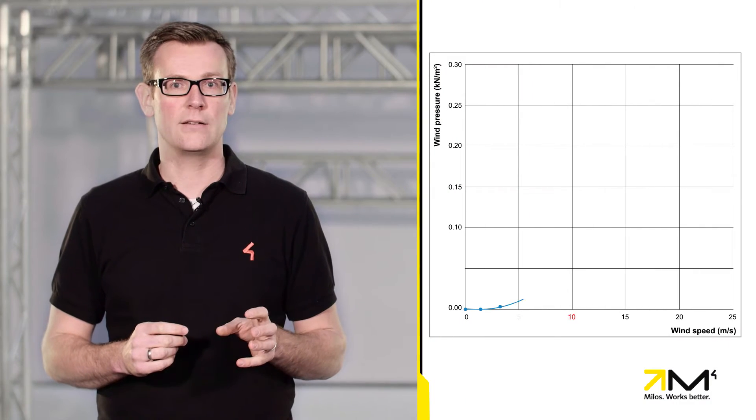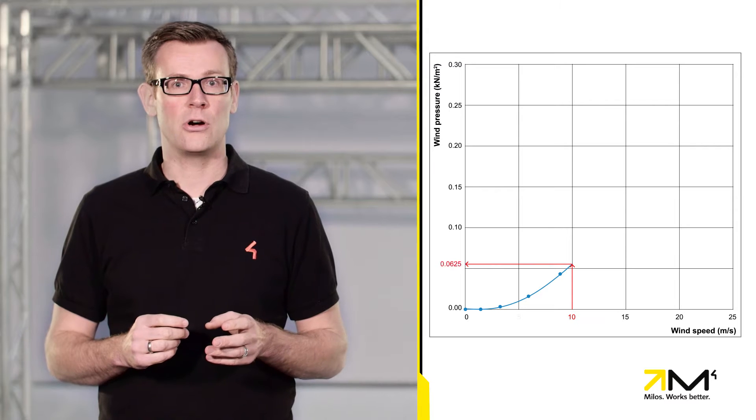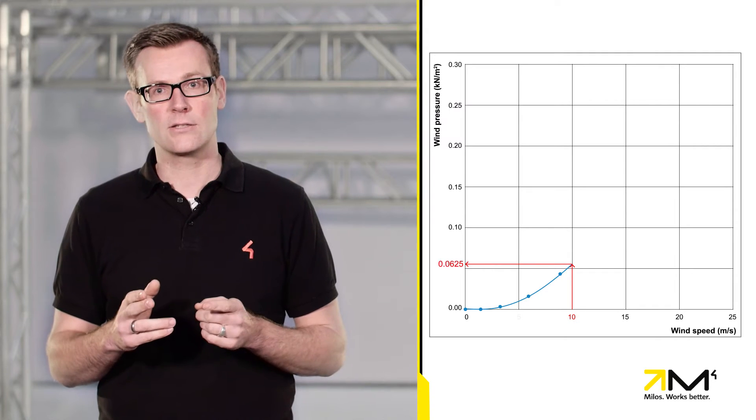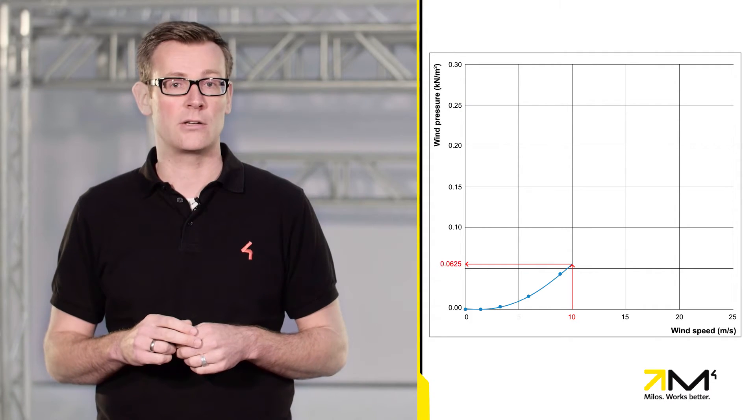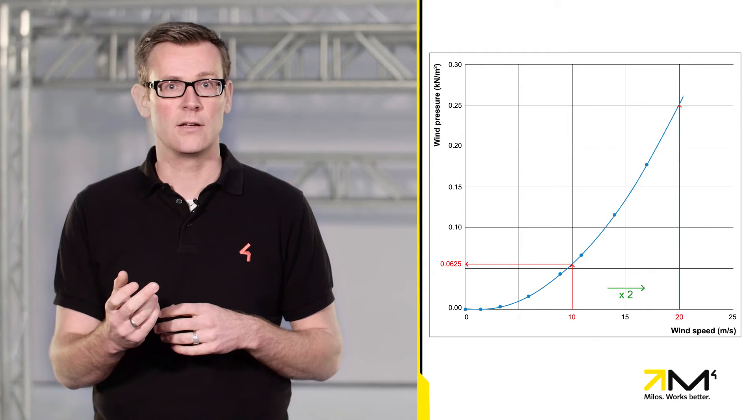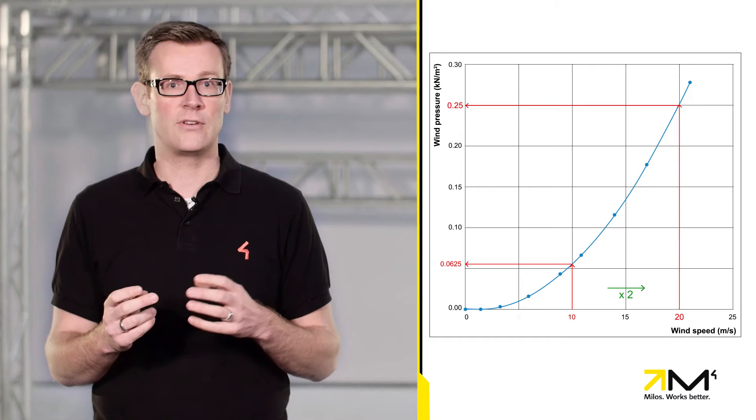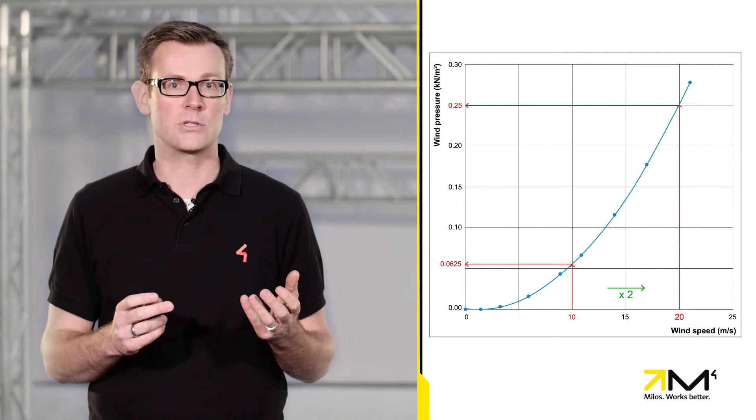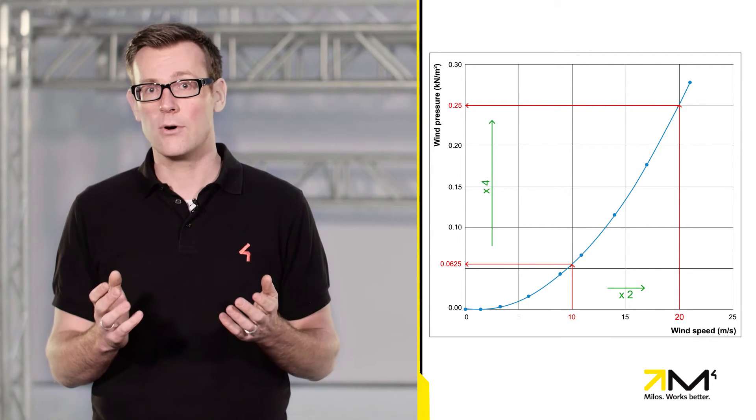The effect of the quadratic equation can be easily shown. A wind speed of 10 meters per second results in a wind pressure of only 0.0625 kN per square meter. Doubling the wind speed to 20 meters per second results in a wind pressure of 0.25 kN per square meter, which is four times more.